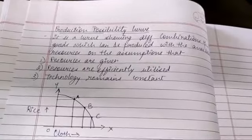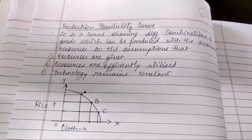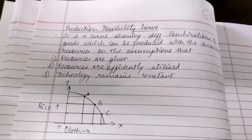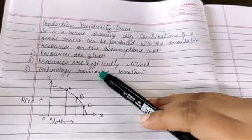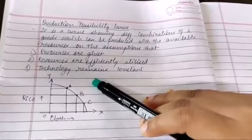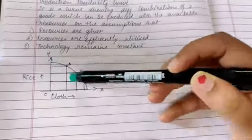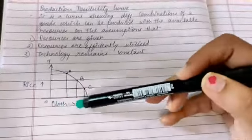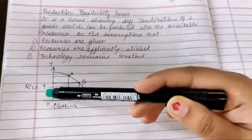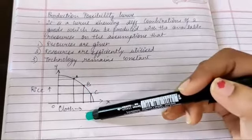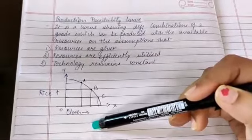The next and last topic for today is the Production Possibility Curve. This is a curve showing different combinations of any two goods that can be produced with given resources, under three assumptions: resources are given, resources are efficiently utilized, and technology remains constant. In the diagram, I have taken rice on the Y-axis and clothes on the X-axis. As we consume more clothes, the production of rice reduces, forming the curve. It can apply to consumer and capital goods as well.